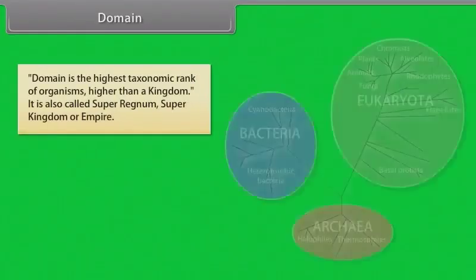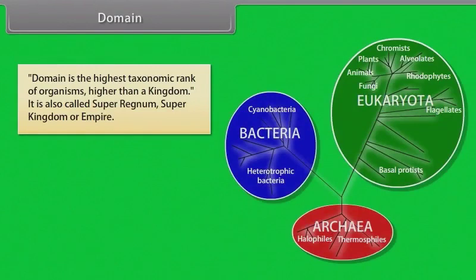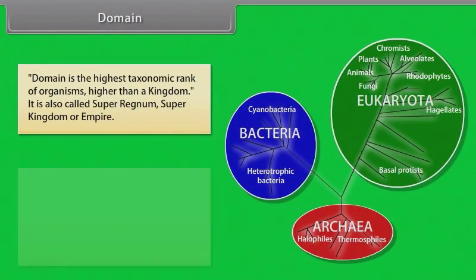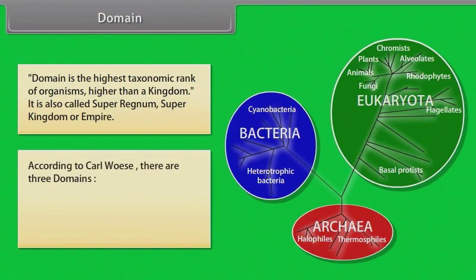Domain is the highest taxonomic rank of organisms, higher than a kingdom. It is also called super regnum, super kingdom, or empire. According to Carl Woese, there are three domains: Archaea, Bacteria, and Eukaryota.